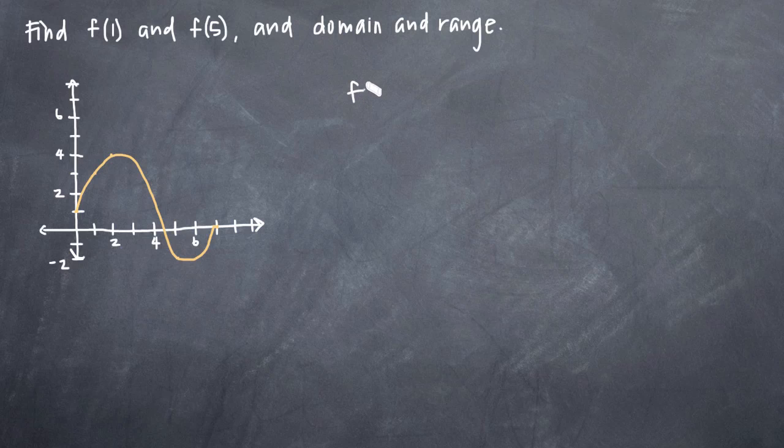When we're asked to find f of 1 and f of 5, all we'll be doing is looking at the y value for the function when x is equal to 1 and 5. So for example, f of 1, we can locate the point on the x-axis where x equals 1. So that's this point right here.